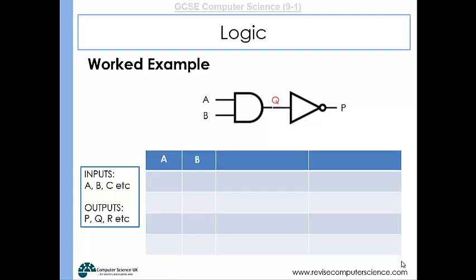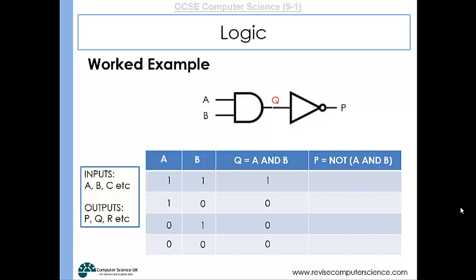Then I'd start to draw my truth table. The inputs are A and B, and I've got two outputs: the output of the AND gate and the output of the NOT. The combinations of inputs are: A and B both one; A one and B zero; A zero and B one; and both zero. In the first row, if A and B are one, the AND gate outputs one — otherwise the AND outputs are zero. Focusing on the NOT gate, where Q is the input and P is the output: if Q is one, the output will be zero; if Q is zero, the output will be one. That is our completed truth table.